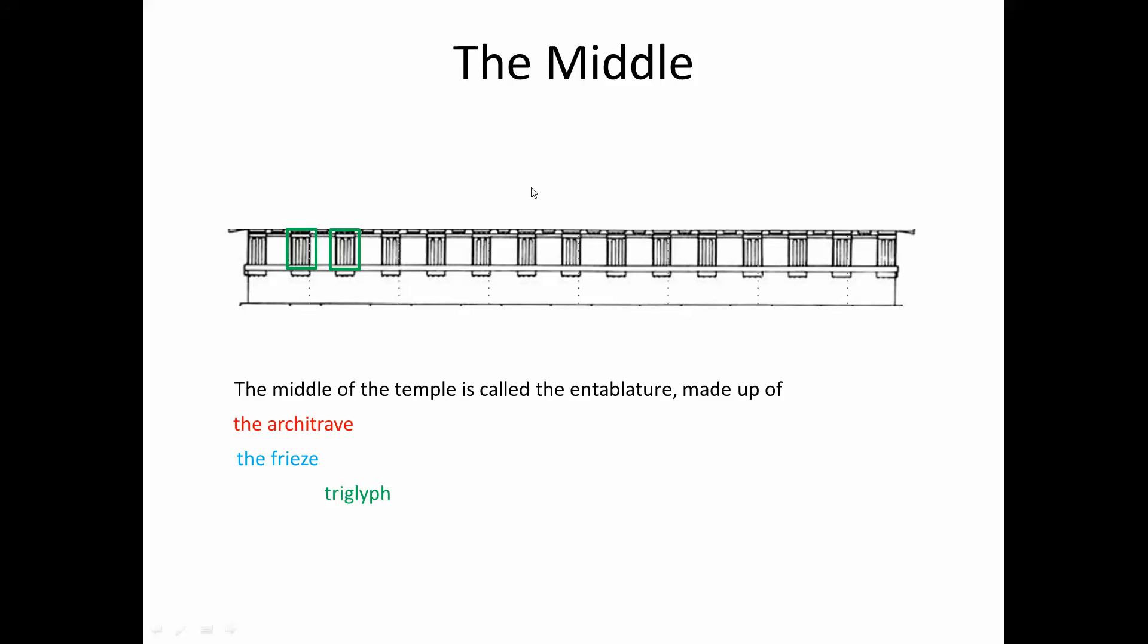But the second part we have in the frieze is called the metopes, and these are the flat sections in between the triglyphs, and you would have seen some of these carved in.